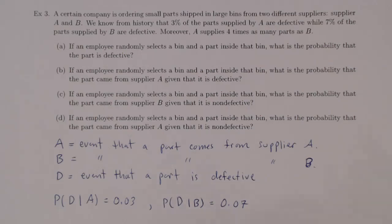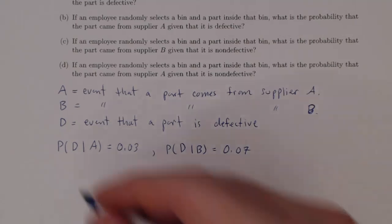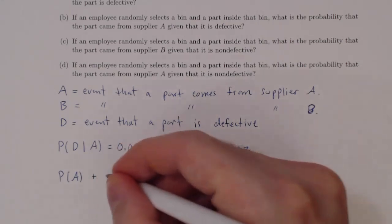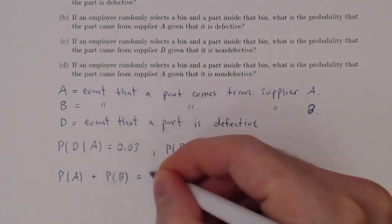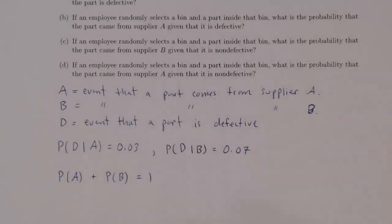How do we figure out the probability of A and the probability of B? There are only two possibilities since there are only two suppliers. Either a part comes from Supplier A or Supplier B. Since those are the only two possibilities with no overlap, the probability of A plus the probability of B must equal 1.